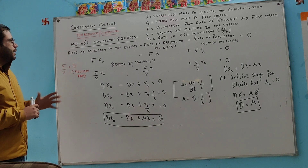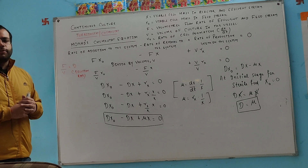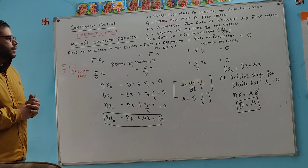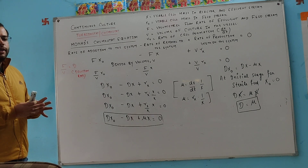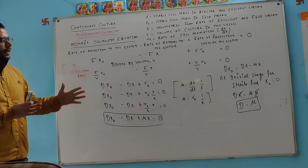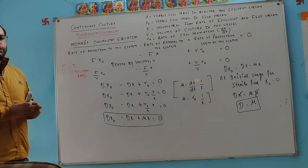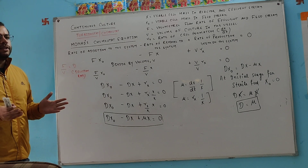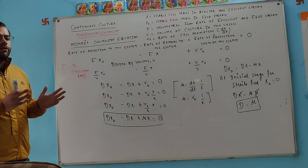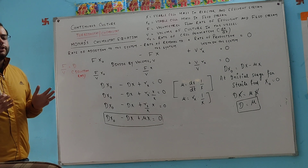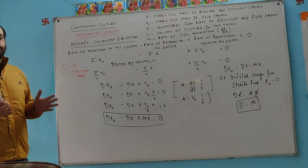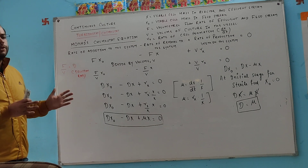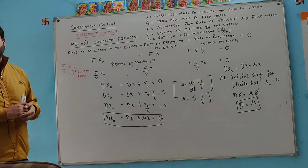Here we have Monod's chemostat equation, which is very important. The main result is that the dilution rate and the specific growth rate are equal to each other. That is one of the key conditions for continuous culture.